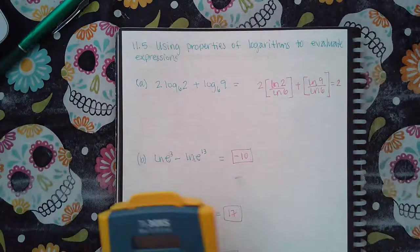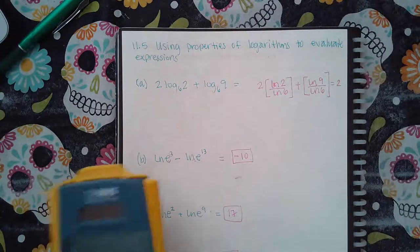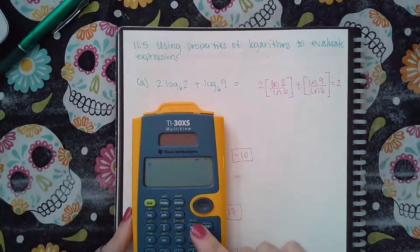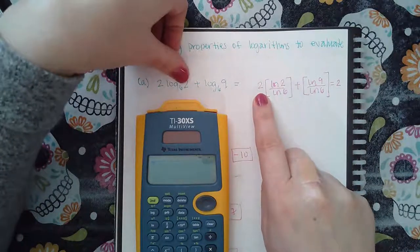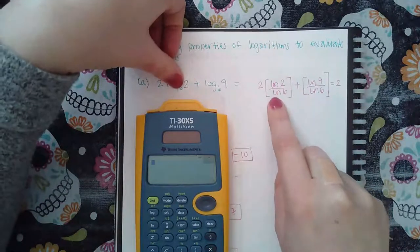For this topic, we're using the change of base formula to type these into the calculator. So I kept the two there and then changed the base here. I did ln of the argument over ln of the base.